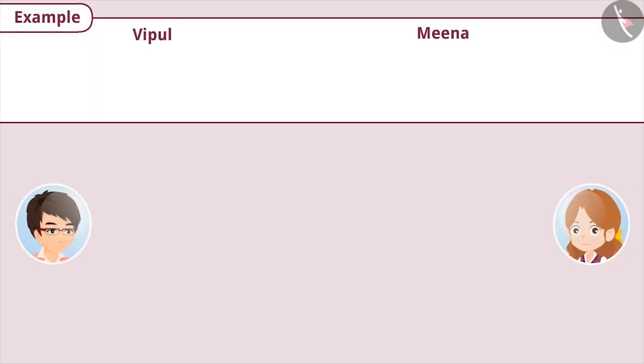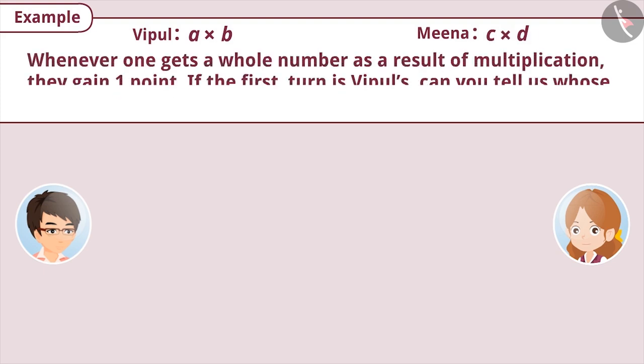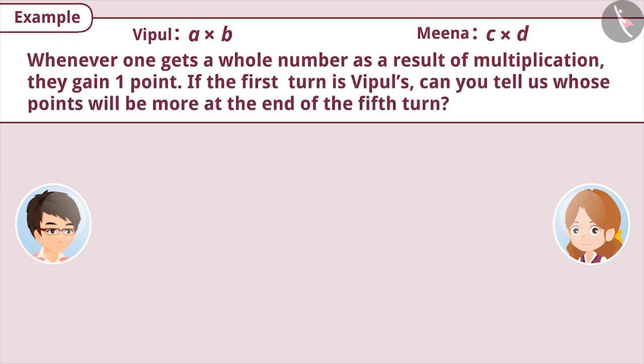Vipul and Meena are playing a game. Vipul is the first one to choose any two whole numbers and multiply them. Then Meena picks two whole numbers and multiplies them. Whenever one gets a whole number as a result of multiplication, they gain one point. If the first turn is Vipul's, can you tell us whose points will be more at the end of the fifth turn?